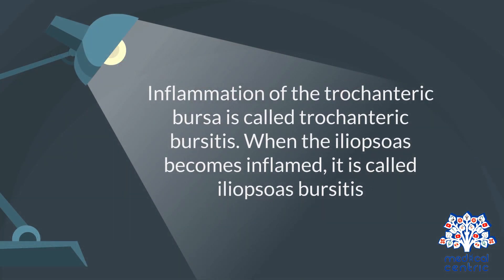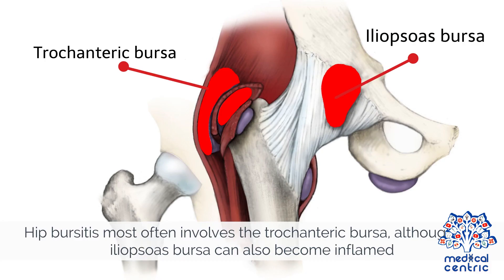Inflammation of the trochanteric bursa is called trochanteric bursitis. When the iliopsoas becomes inflamed, it is called iliopsoas bursitis. Hip bursitis most often involves the trochanteric bursa, although the iliopsoas bursa can also become inflamed.